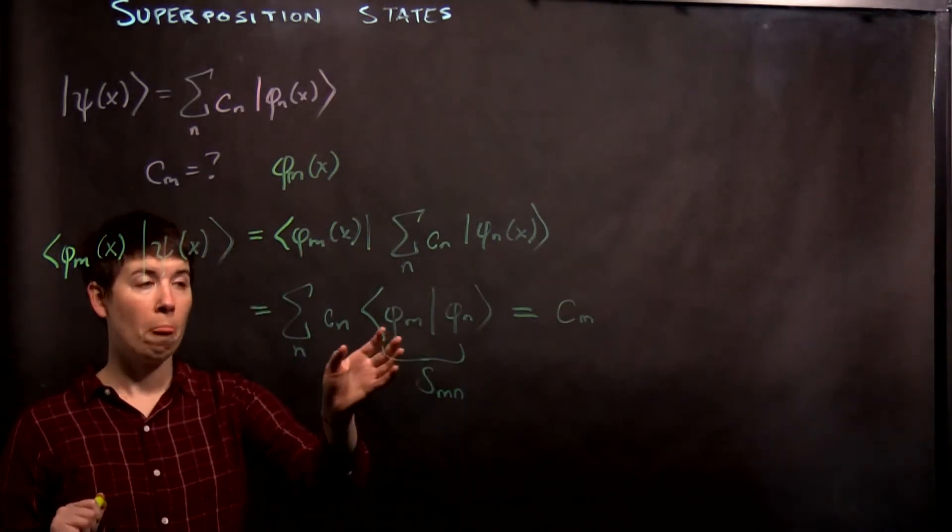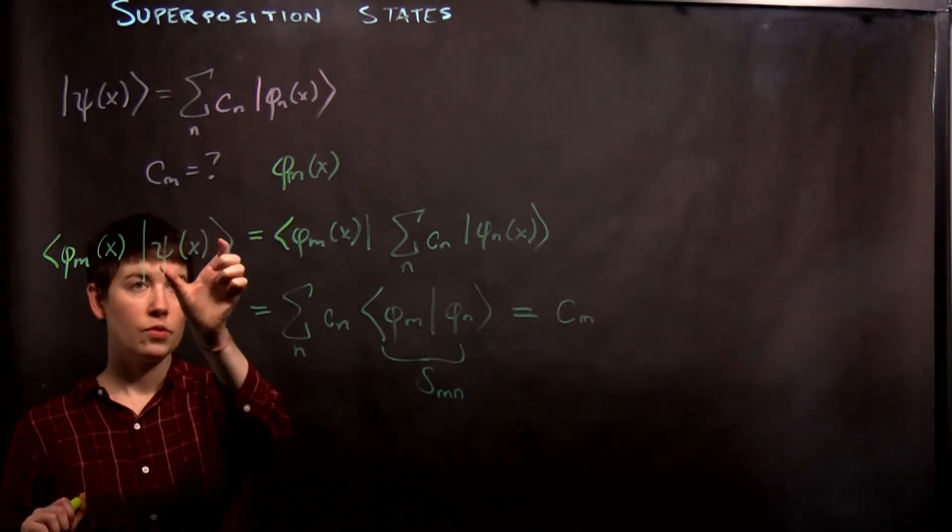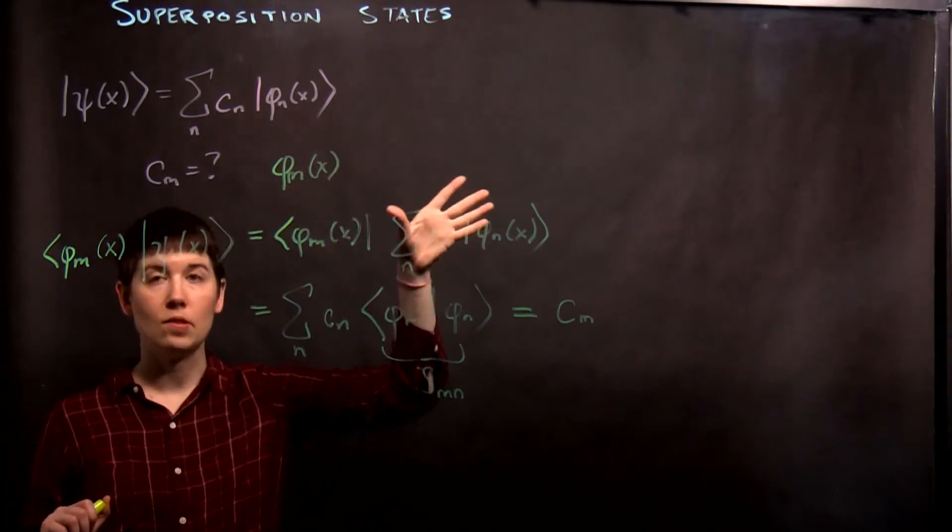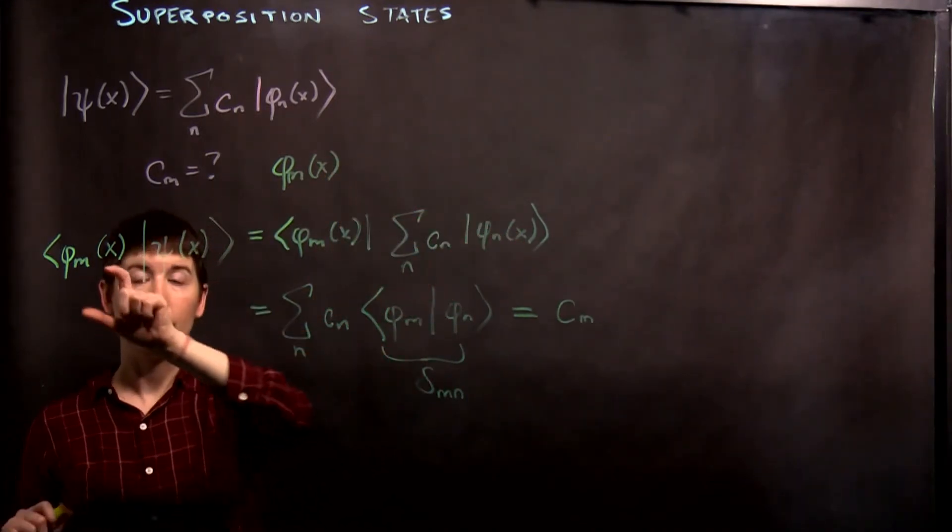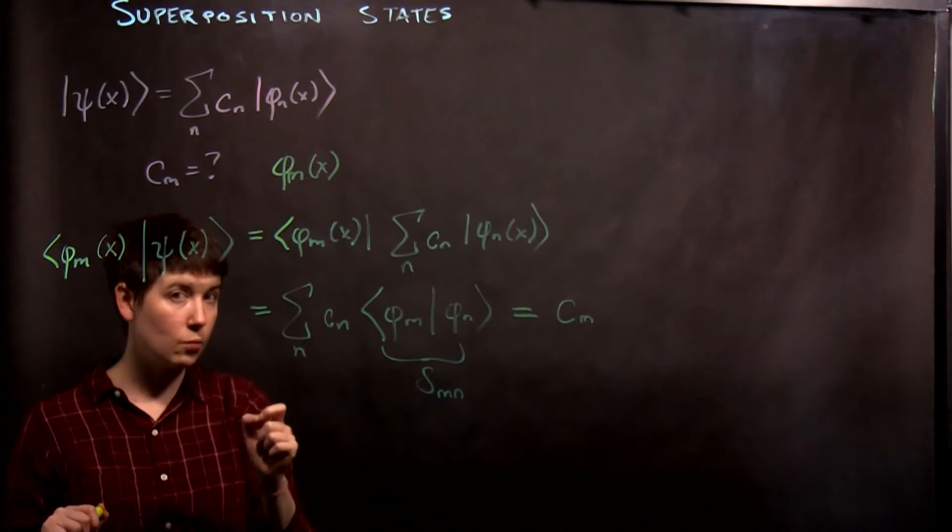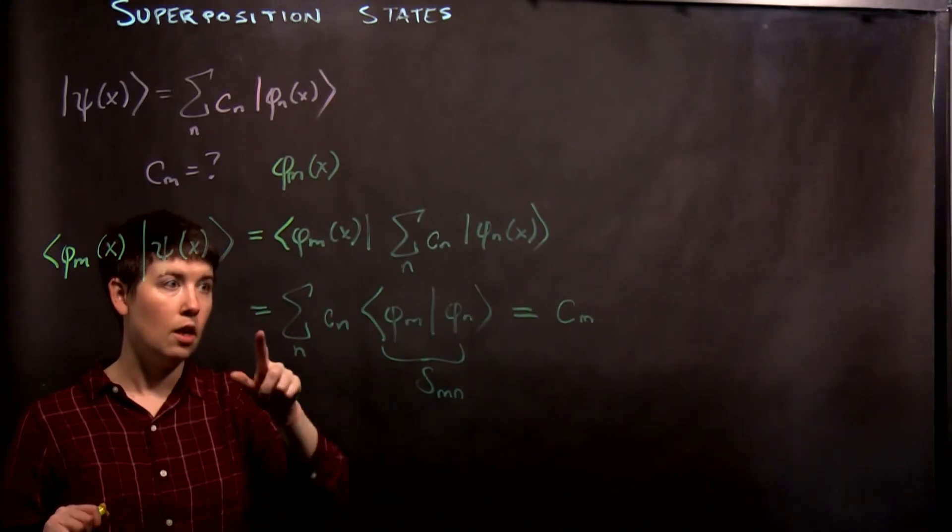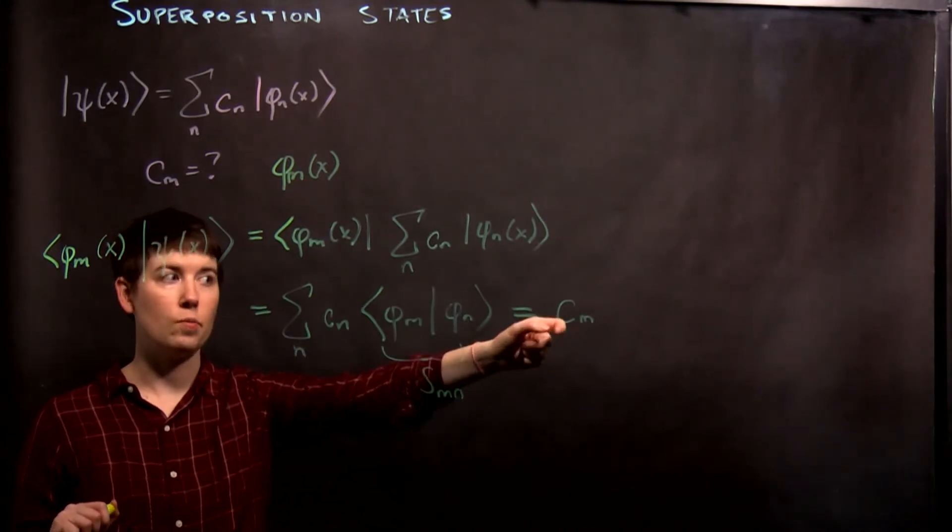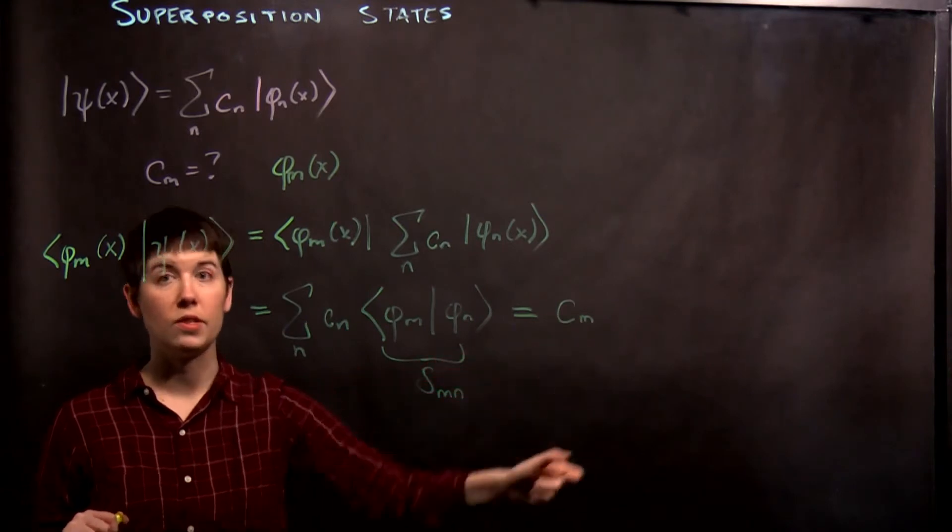So this is a critical step. I started by saying, okay, this is expanded as the series. I'm now taking the inner product with one specific energy eigenstate, and now I see that that allows me to pull out one specific value of c m.